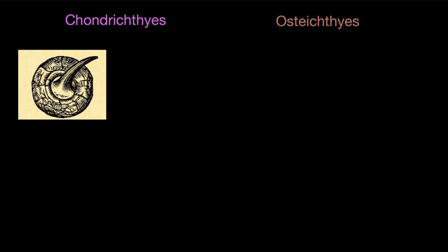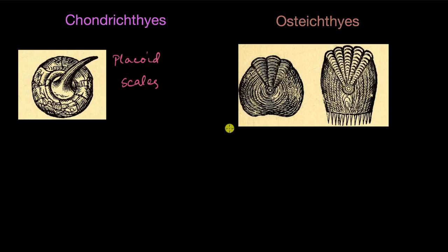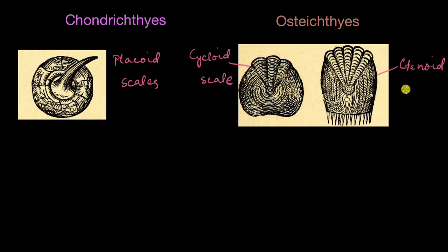The two fish have different types of scales. Chondrichthyes have scales with a projection kind of like a tooth — these are called placoid scales. Osteichthyes have several types; the most common are cycloid scales, which are circular, and ctenoid scales, which look similar to cycloid but have teeth like a comb — 'cteno' meaning comb.